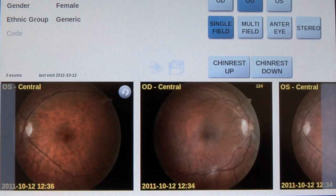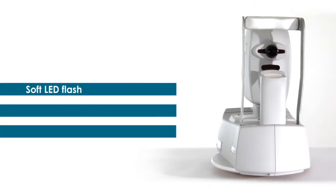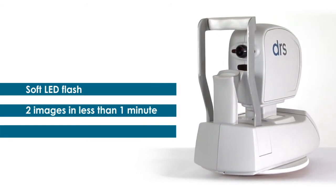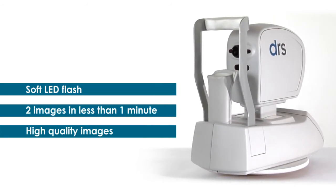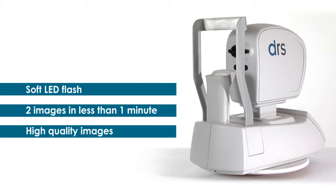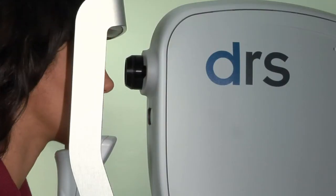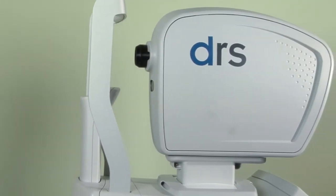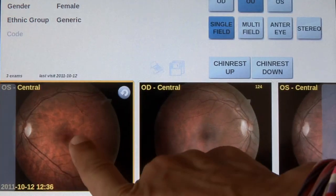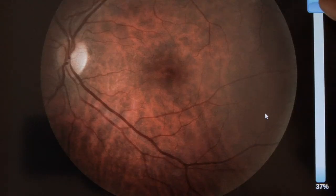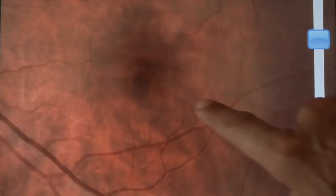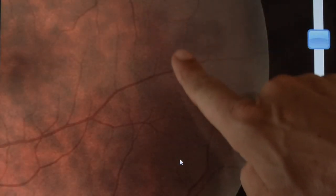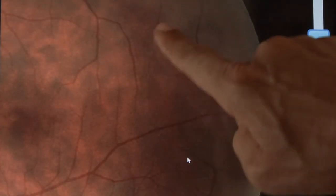In less than one minute, the DRS generates two high-quality images — one for the right eye and one for the left eye. Because it uses a soft LED flash, the DRS is very patient-friendly. It quickly and accurately captures digital images of the central retina without pharmacological pupil dilation.